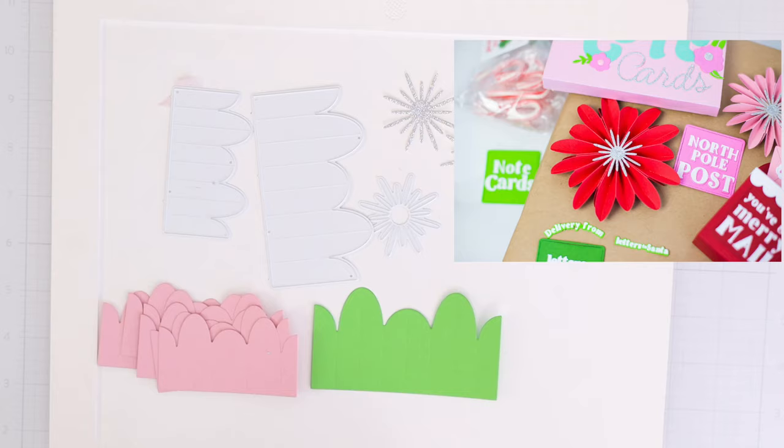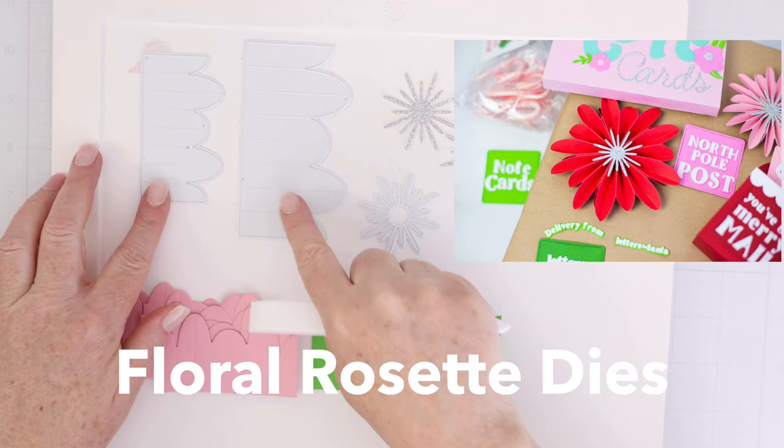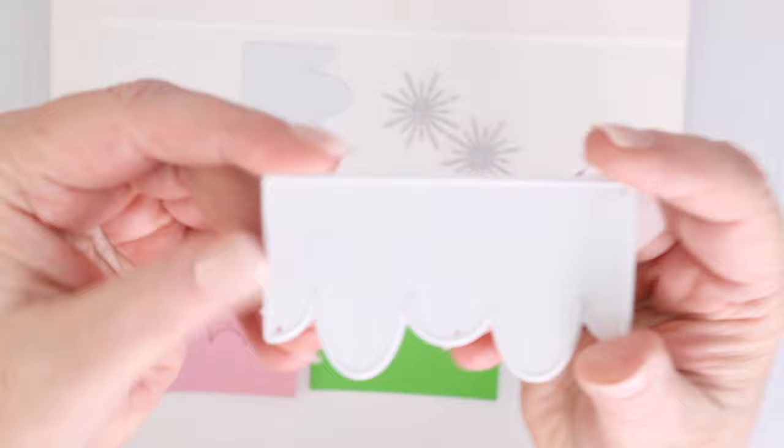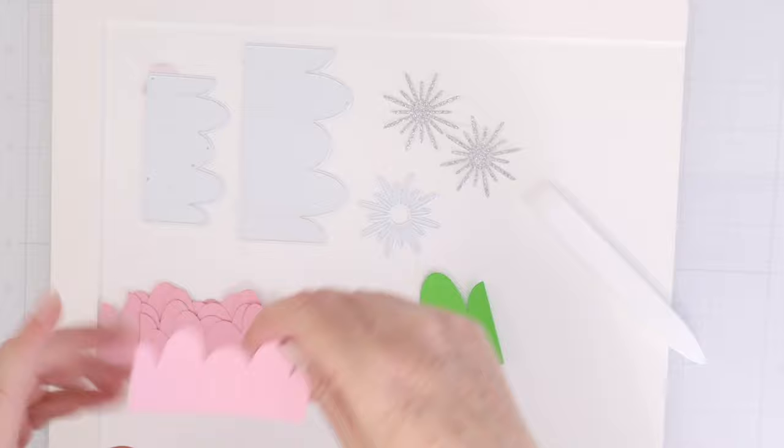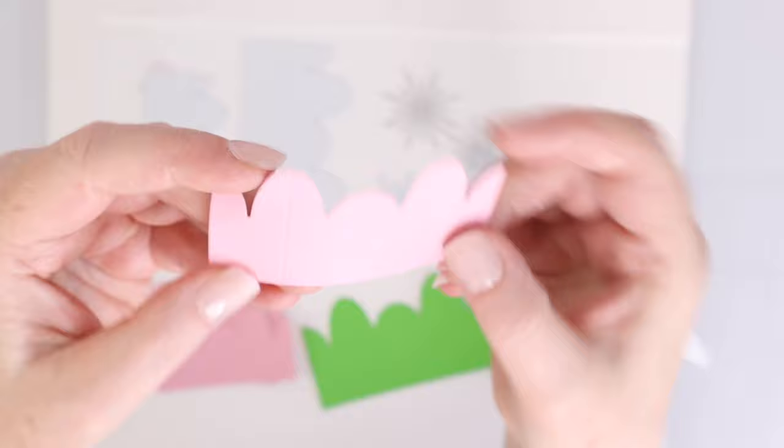This is the floral rosette dies. Now there are three dies in this set. There's a small rosette die, and you can see that it cuts those nice scallops and also scores the lines for you, which I love. This makes it so much easier. And that beautiful scallop in the two different sizes is super cute once it's all cut out.